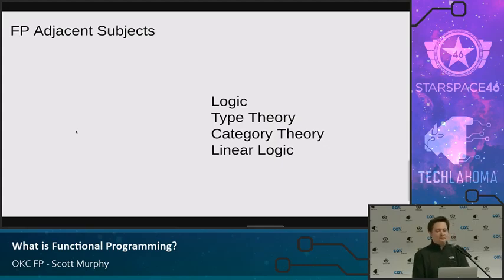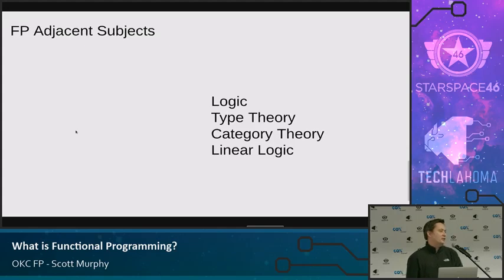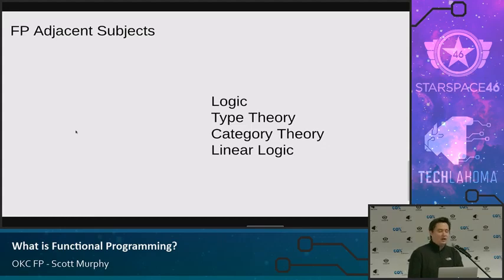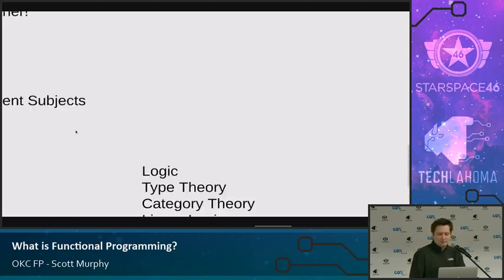FP-adjacent subjects: just like the core of functional programming are functions, once you introduce the idea of a function there are all these related concepts in mathematics — logic, type theory, category theory, and linear logic. That's a sub-discipline of logic, but I want to call it out specifically because of Rust. I would love to start doing some talks about each of these categories. Jordan's done a few on category theory. I'd love to see a type theory talk, or if somebody is a Rust expert, I'd love a talk about that.